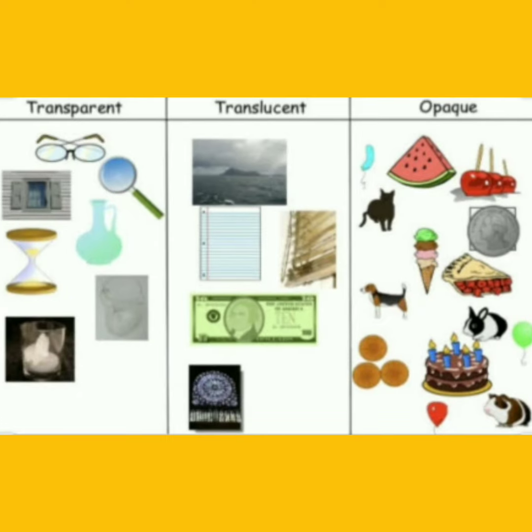Now you find out some transparent, translucent, and opaque objects that are already present in your home, and note down their names.